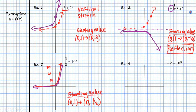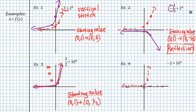Finally, let's look at a = negative 2 with base 10. This function will go up extremely quickly, and now it's going to be multiplied by negative 2. So not only are we doubling the value of each point, we're reflecting it across the x-axis. This goes from 10 to now 20, and we see that this jump is extremely quick. My new starting value went from (0, 1) to (0, negative 2).